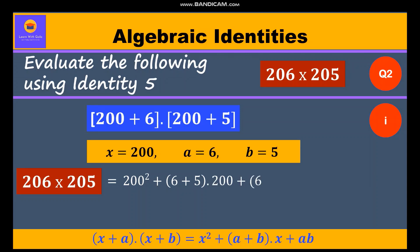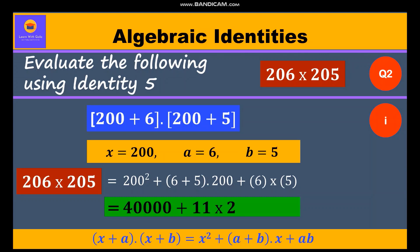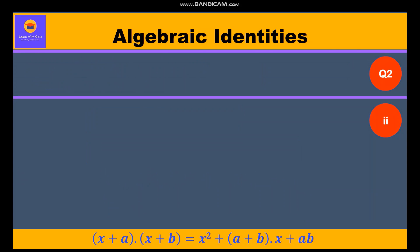Further, we will solve: we'll get 40,000 plus 11 into 200 plus 30, and further we will solve to get the answer 42,230. Now we shall move to the second question.